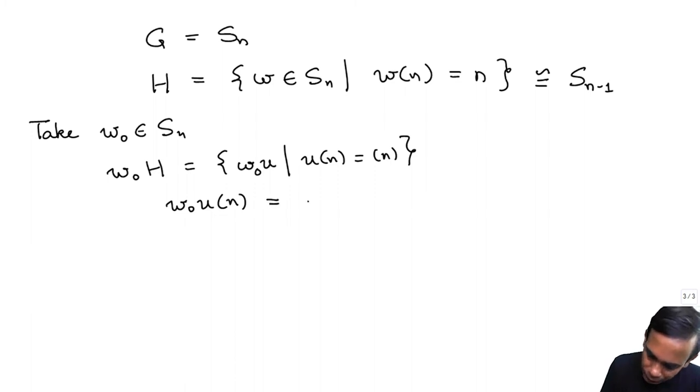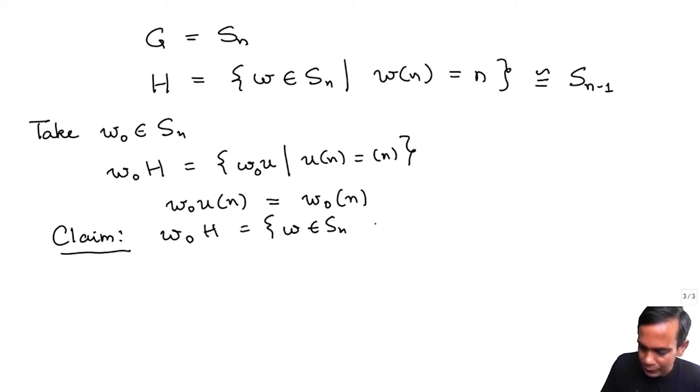So this is equal to, by definition, W0 U where U of N is equal to N. So I ask where does W0 U take N itself? W0 U takes N to, well U takes N to N, so it takes it to W0 of N.